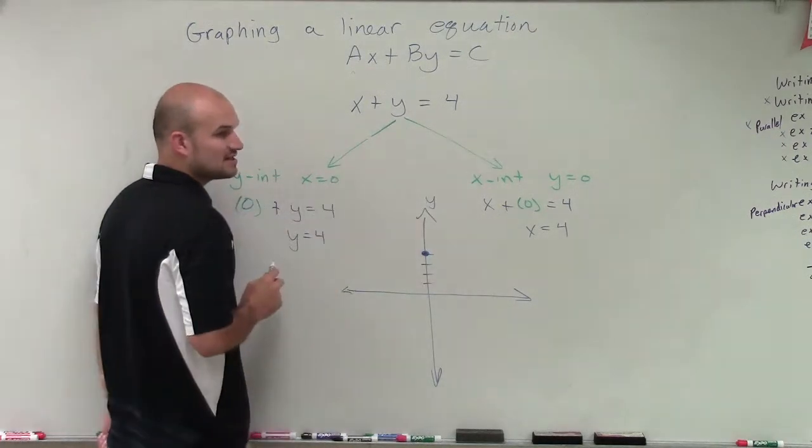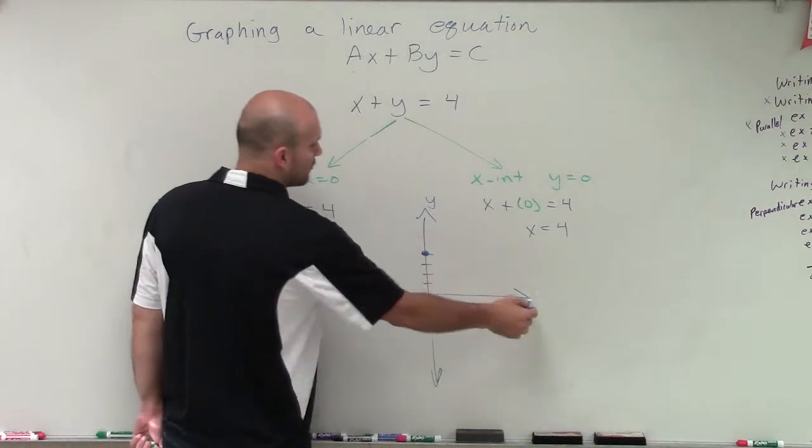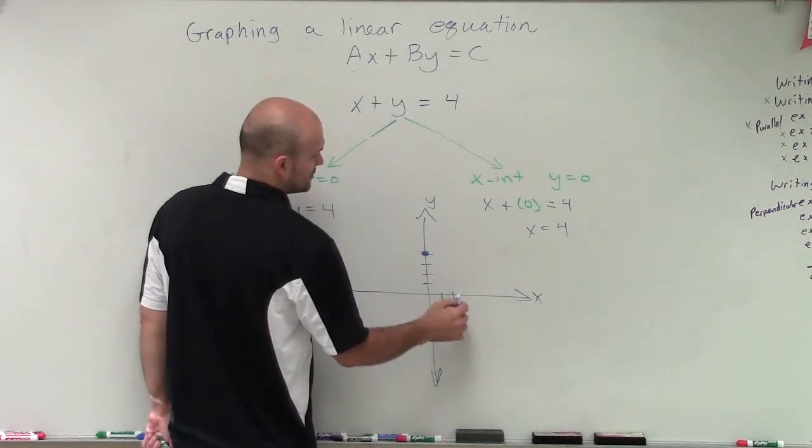And then since my y-intercept is a positive 4, I'm going to go to the right 4 units on the x-axis: 1, 2, 3, 4.